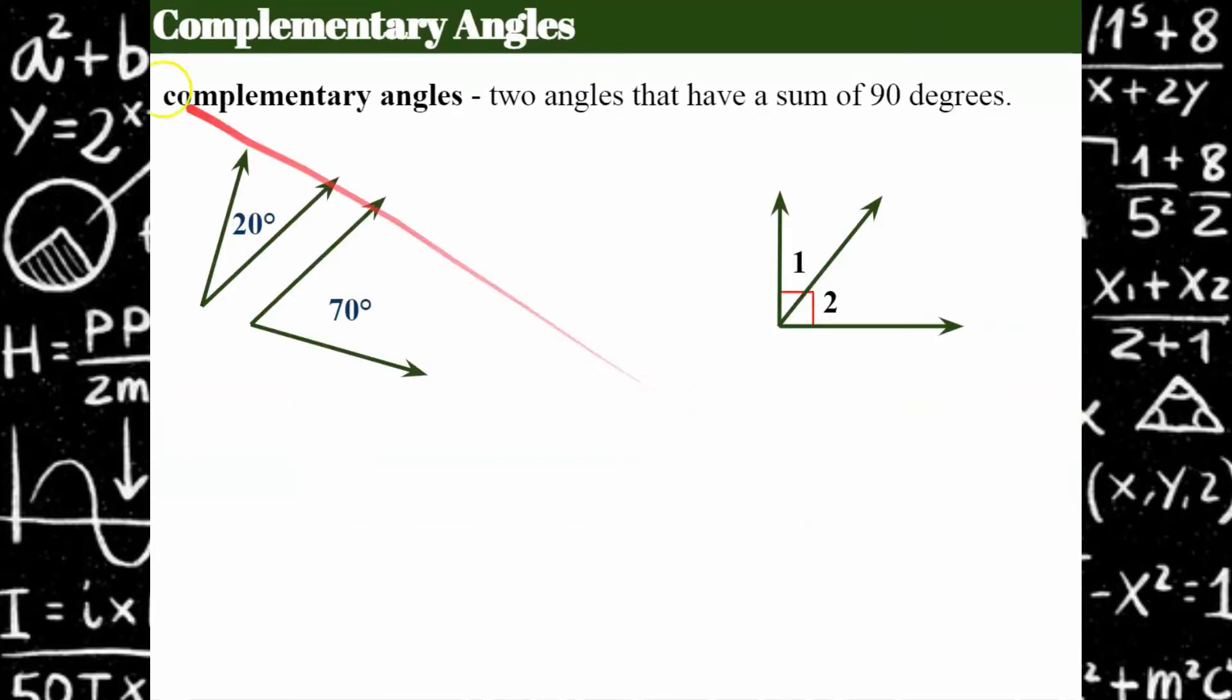So let's go over complementary angles, which are two angles that have a sum of 90 degrees. You could have two angles that are separate, so they stand alone. So I have a 20 degree angle and a 70 degree angle, but together 20 plus 70 is 90 degrees. So this pair of angles are complementary angles.